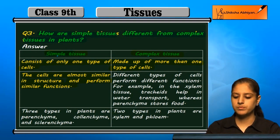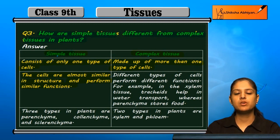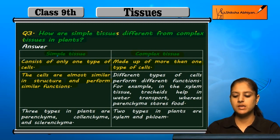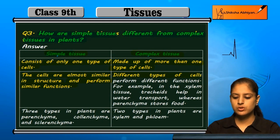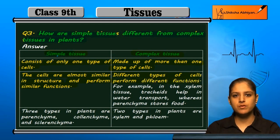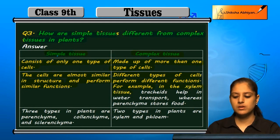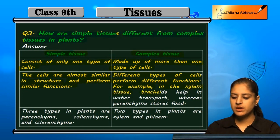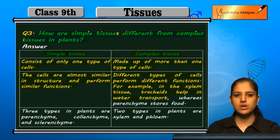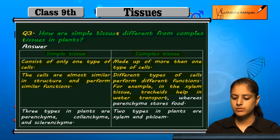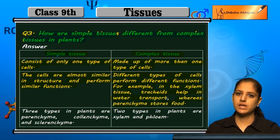In complex tissues, because there are many types of cells, they perform different types of functions. For example, xylem tissue helps with water transport, and parenchyma helps with food storage.